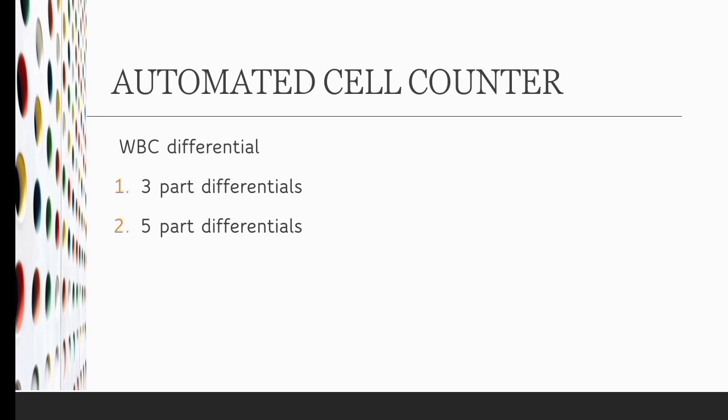Depending on the principle used for the WBC differential count, the automated cell counters are of two types: 3 part differential and 5 part differential analyzers.